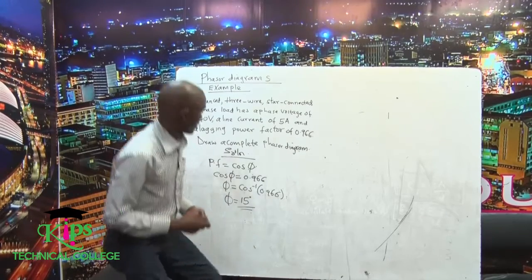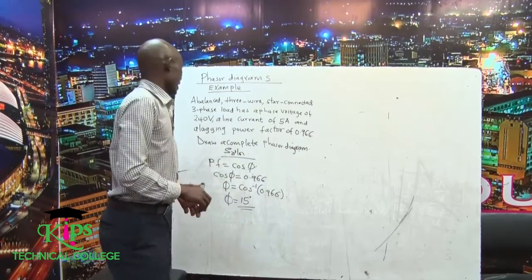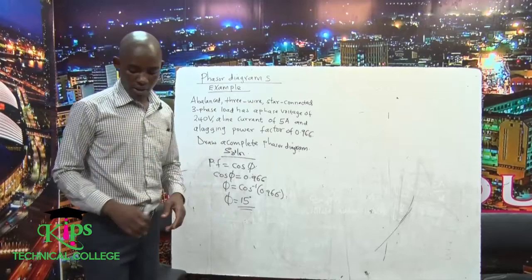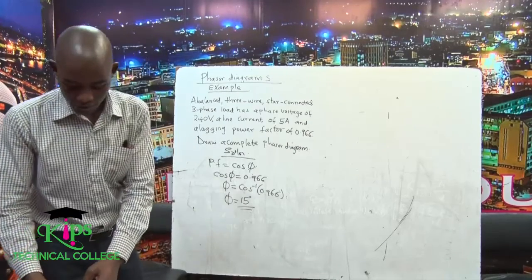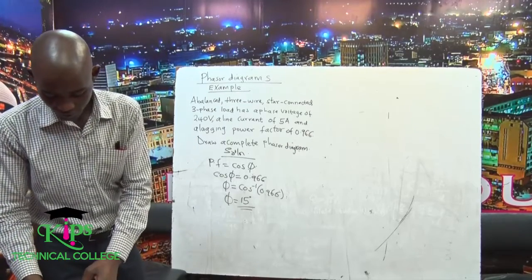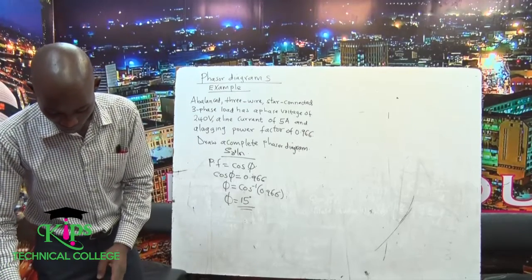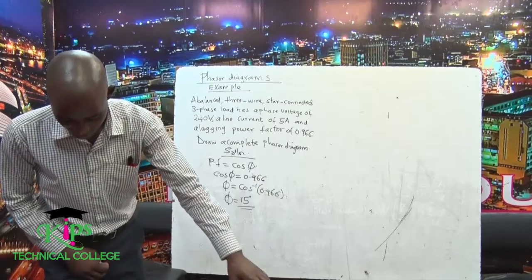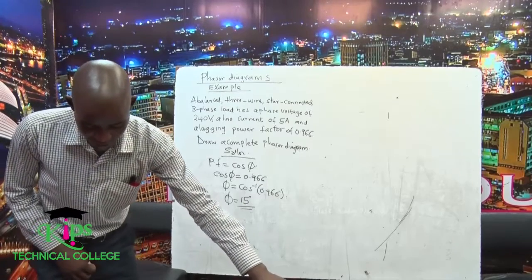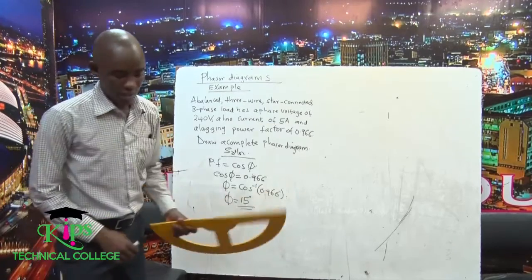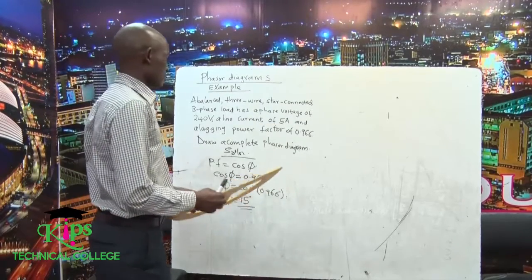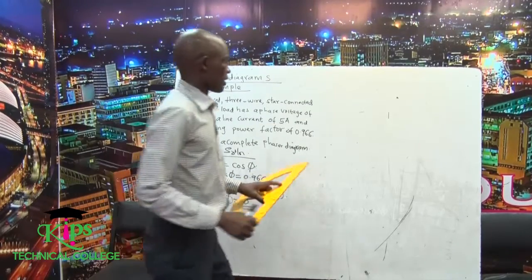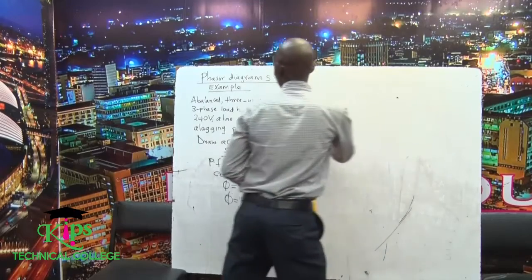This means the current lags by 15 degrees — it is lagging by 15 degrees. The next thing you need to do is draw the three lines which are displaced, because it is a balanced system.